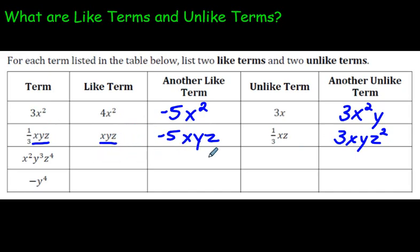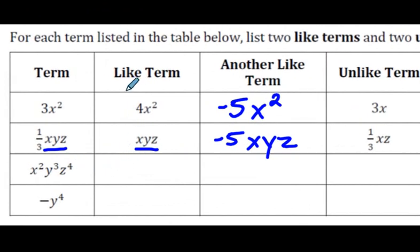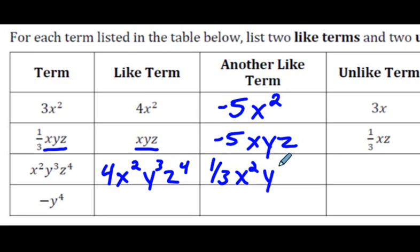Well, let's do these on our own because now there's no help. So x²y³z⁴. Another like term would be, let's pick a number, 4. And x²y³z⁴. Another like term, ⅓x²y³z⁴.